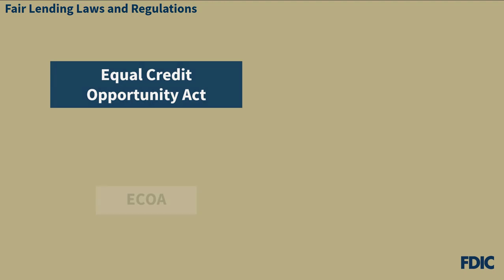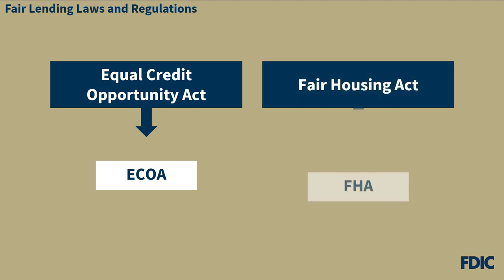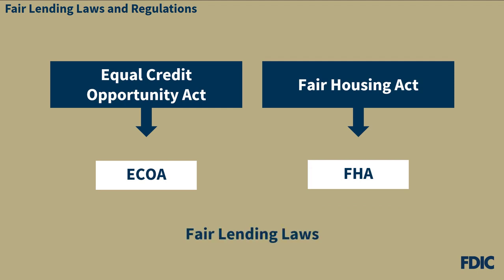The federal fair lending laws consist of the Equal Credit Opportunity Act, which we'll refer to as ECOA, and the Fair Housing Act, or FHA. Throughout this video, we'll refer to these federal laws jointly as the Fair Lending Laws. As a side note, examiners may refer to Reg B, which is the regulation that implements ECOA.